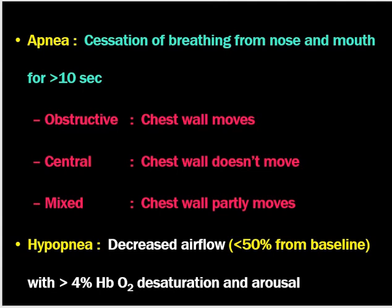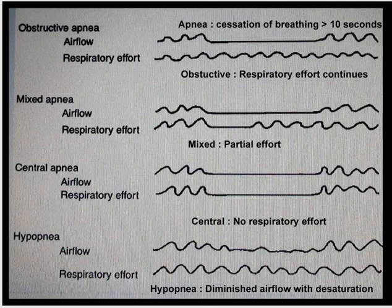Apnea can be classified as obstructive type, in which the chest wall moves; central type, where the chest wall doesn't move; and mixed type, where there is partial movement of the chest wall. Hypopnea is defined as decreased airflow less than 50% from baseline with more than 4% oxygen desaturation and arousal. When there is oxygen desaturation, there will be arousal. The graph shows obstructive apnea, mixed apnea, central apnea, and hypopnea.